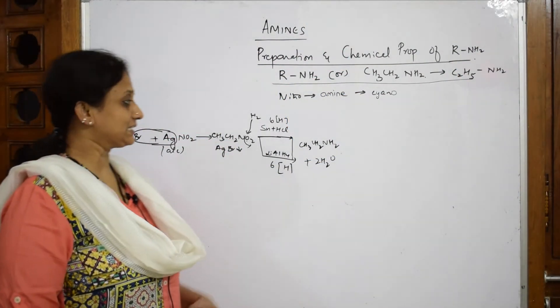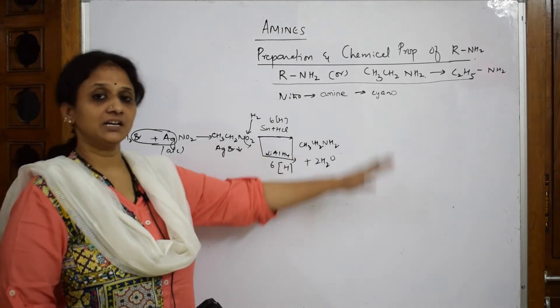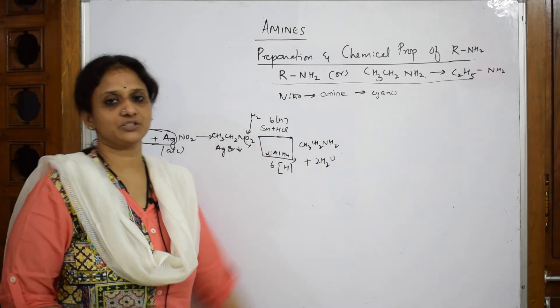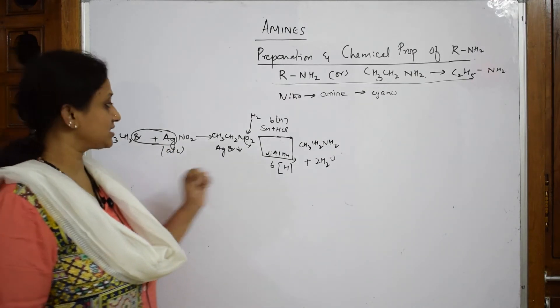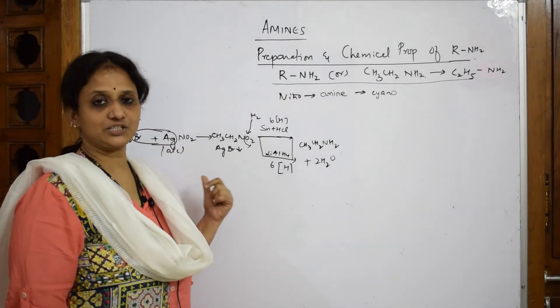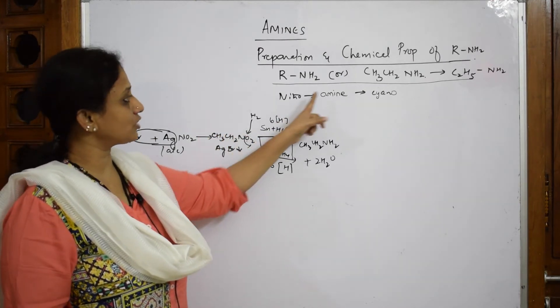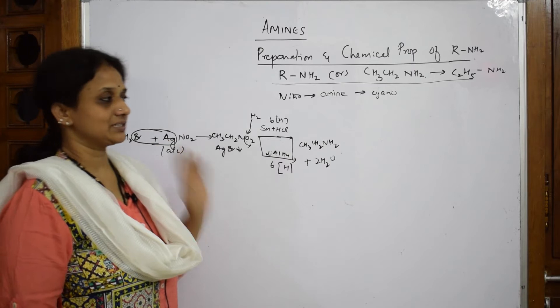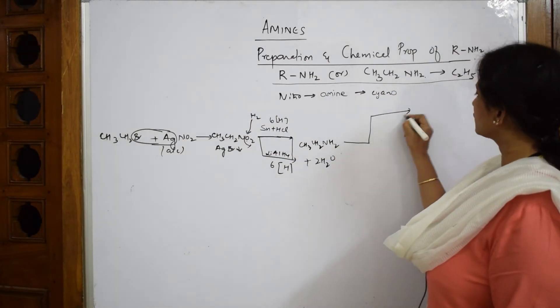Now let us learn the next set of reactions for primary amines. I am comparing different common types. The same story again: alkyl halide treated with silver nitrate gives nitroethane, which is then converted to amines. Now what happens if I take this amine and perform a reaction called aminolysis?